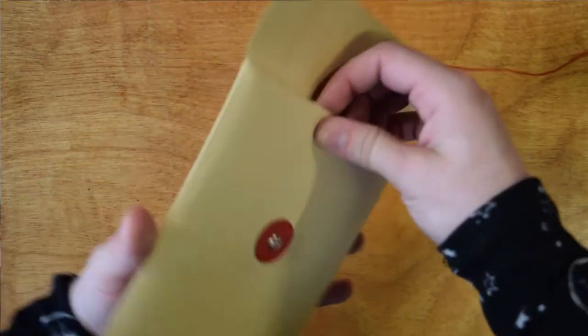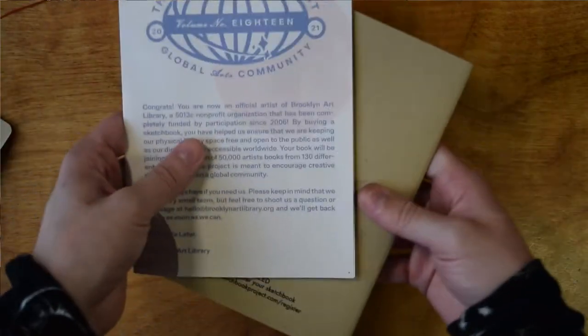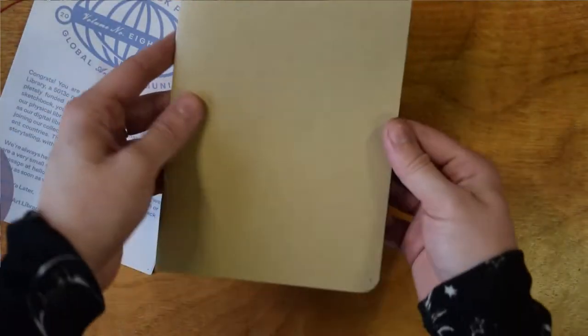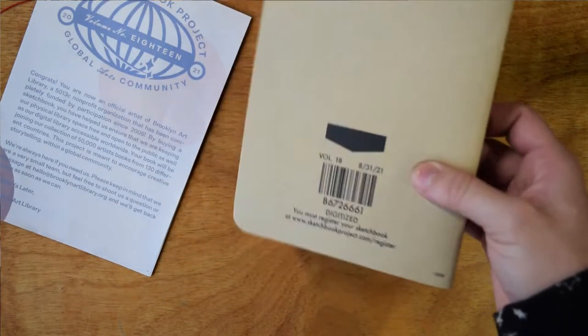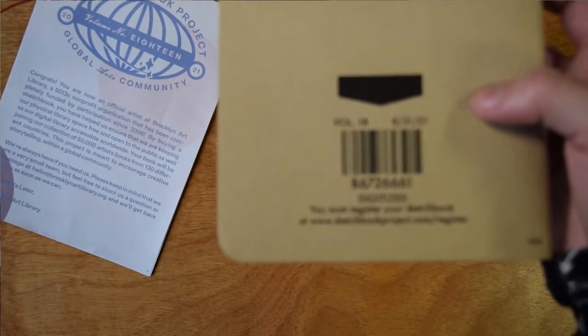So opening up this little packet that they sent me, it looks like here's our sketchbook. It's just a blank, very average, typical five by seven inch sketchbook craft cover and back with your barcode that they're going to scan everything in with. And just plain old white paper. The paper is pretty thin and average. And I have done some research based on other people's opinions. It's not great paper for mixed media. I am definitely a mixed media artist. I like wet media. So that is why we're going to be rebinding the book today.